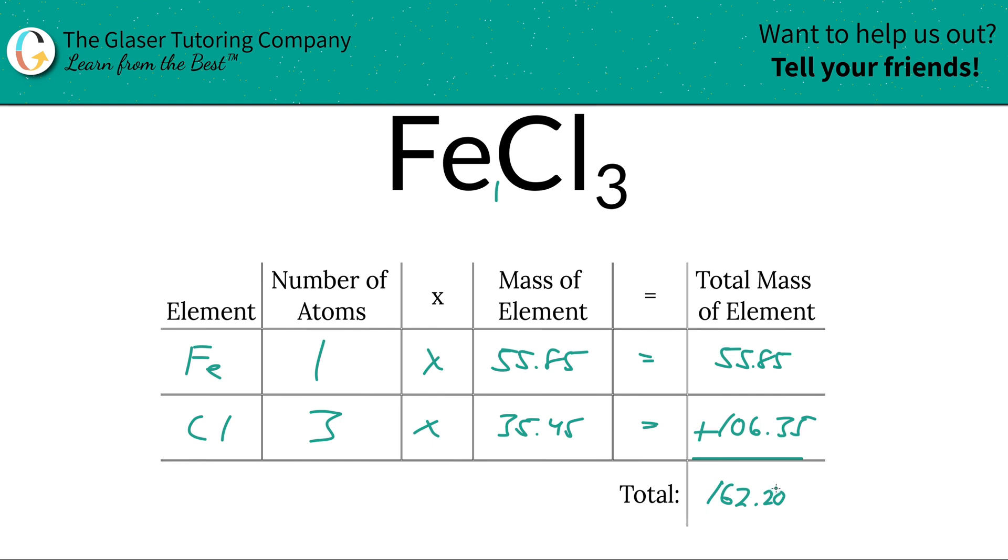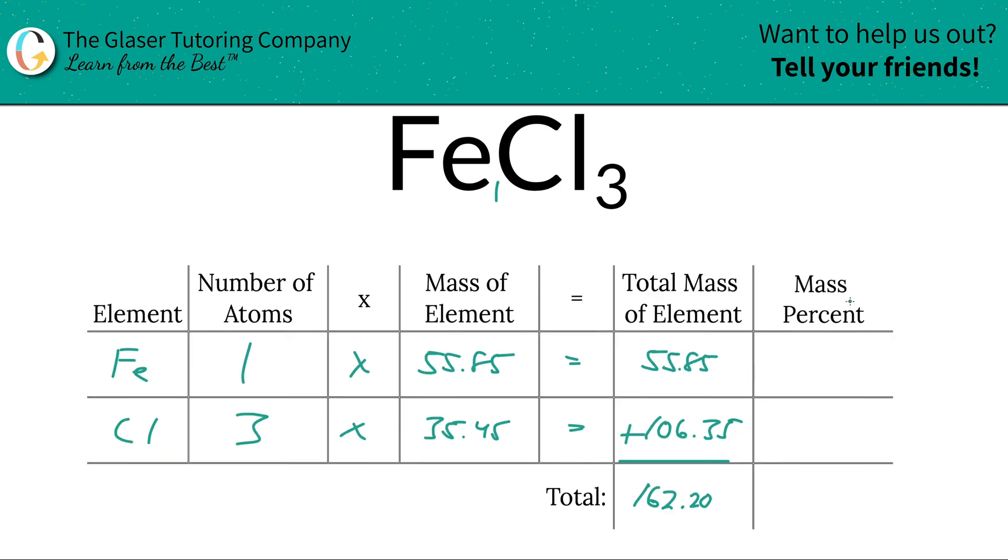I'm going to add a column to the table. You'll see how nice and easy this is. So to find the mass percent or percent composition of iron, we're simply going to take the total mass of that iron in the compound, 55.85, and then we're going to divide it by the total mass of the entire compound, the 162.20, hence why we had to do that first. And this is a simple percent calculation, part over whole times 100. So when you calculate that, it's going to work out to be about 34.43 percent.